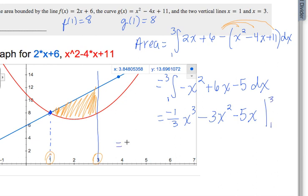So plug in 3 minus plug in 1. So negative 1 third times 3 cubed. I'm going to do a little work in my head as I go. So 3 cubed is 27 minus 3 times 3 squared, that's 9, minus 5 times 3 is 15, minus big parenthesis, plug in 1. So we plug in 1, we'll get negative 1 third, minus 3, minus 5. And that's just kind of tedious right there, but let's come over here and keep going.